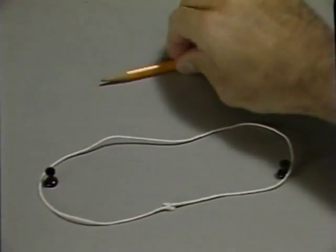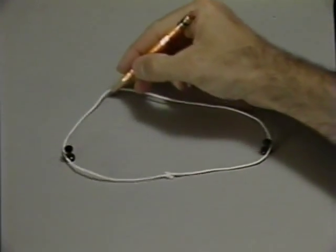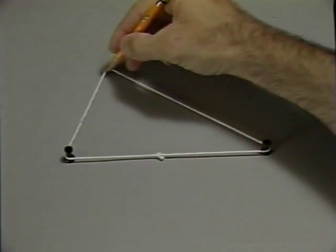In the most graphic terms, a piece of string and two pins illustrate the simple elegance of an ellipse.